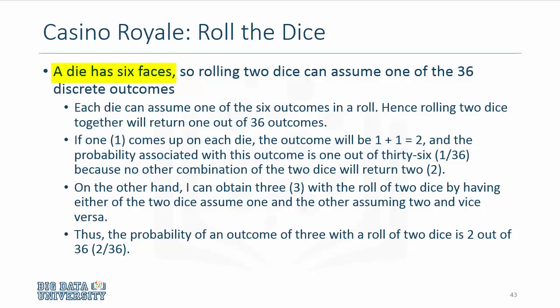Consider two dice. A die has six faces. If you roll two dice, it can assume one out of 36 discrete outcomes. If you were to roll two dice, the probability that both die would have 1 as the outcome would be 1 plus 1, 2. And there's only one possibility of getting that, and that's 1 out of 36.